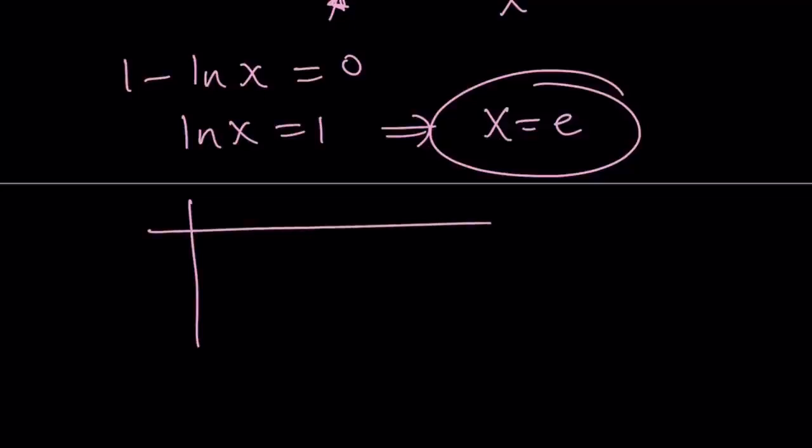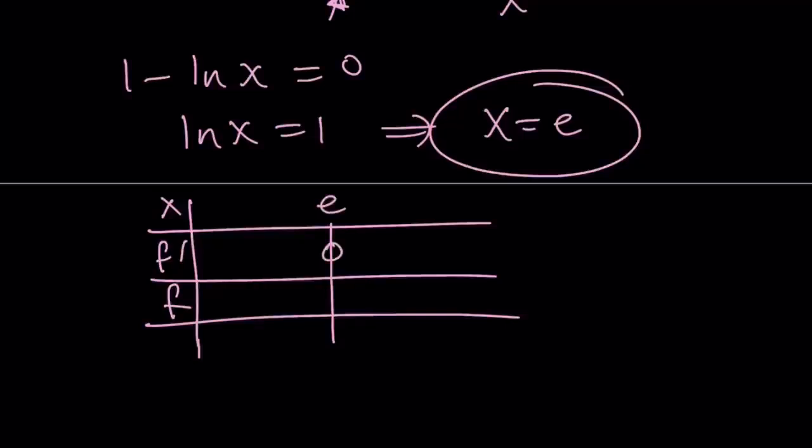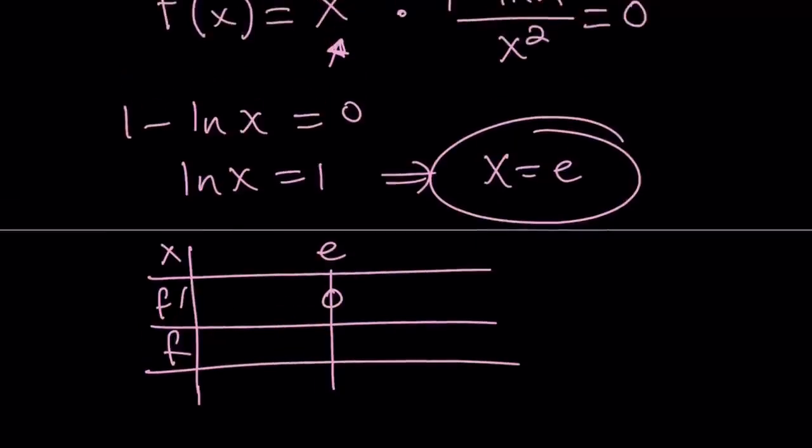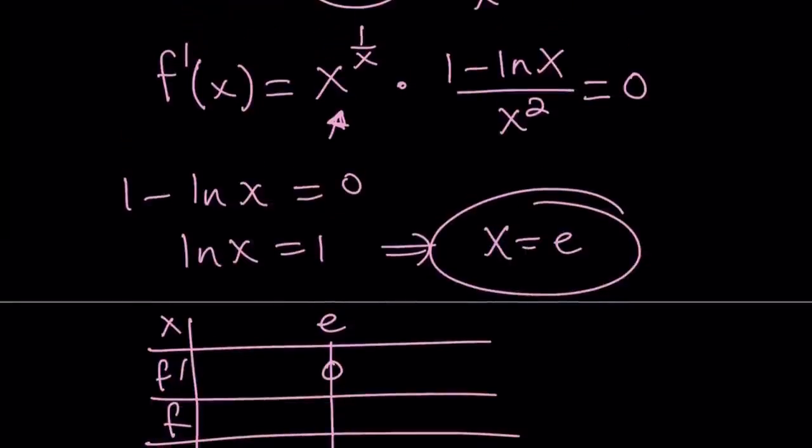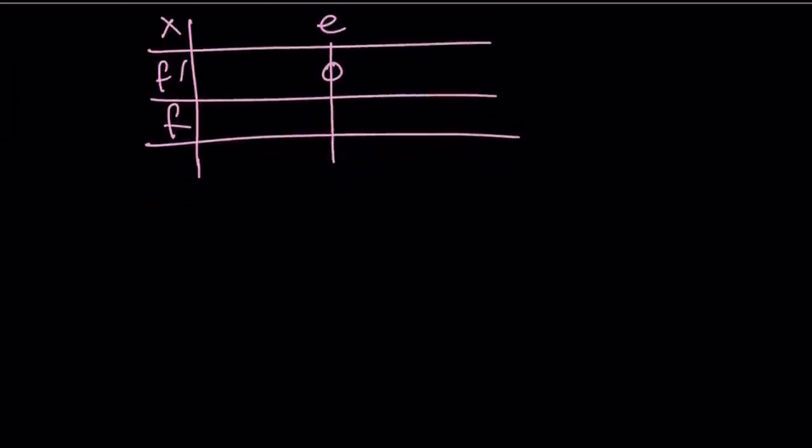Let's go ahead and make a table. Our table is going to have the following rows: x, f prime, and f. My goal is to find out the intervals on which our function is increasing and decreasing. Since e is the critical value, it sets the derivative equal to 0. I want to check to the right and to the left of e. I want to find the sign of the derivative. Notice that x to the power 1 over x is always going to be positive, and x squared is also positive for non-zero values. So the only thing that matters is 1 minus ln x.